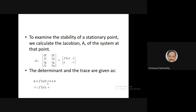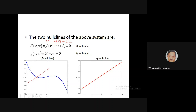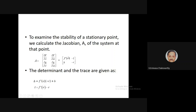To assess stability, we calculate the Jacobian. The Jacobian has entries: ∂F/∂v, ∂F/∂w in the first row, and ∂G/∂v, ∂G/∂w in the second row. Working this out gives F′(v) and −1 in the first row, and b and −r in the second row. The determinant is F′(v)·(−r) − (−1)·b = −F′(v)·r + b, and the trace is F′(v) − r.